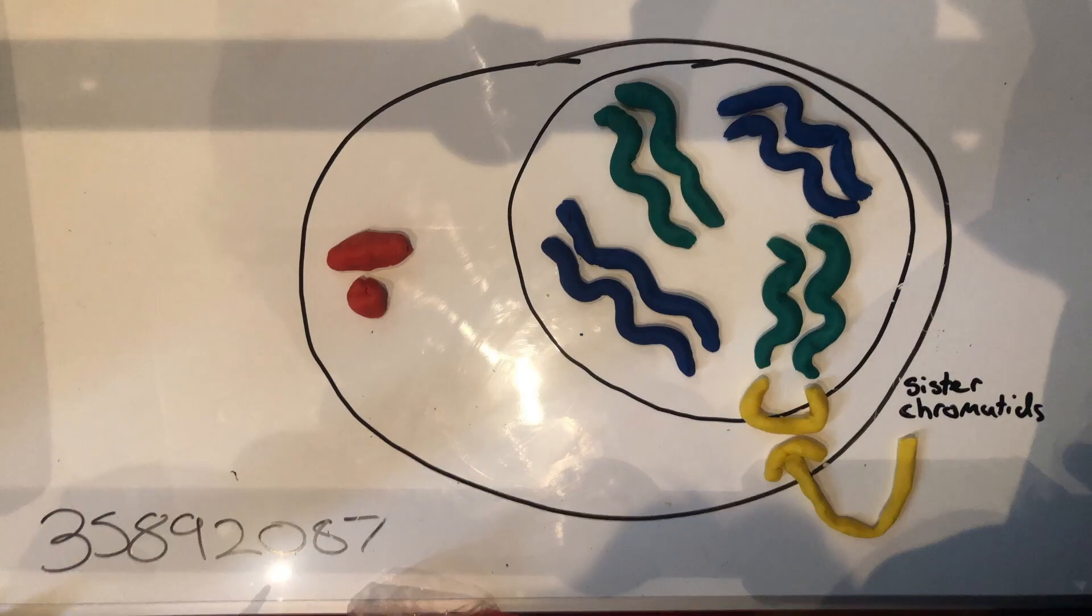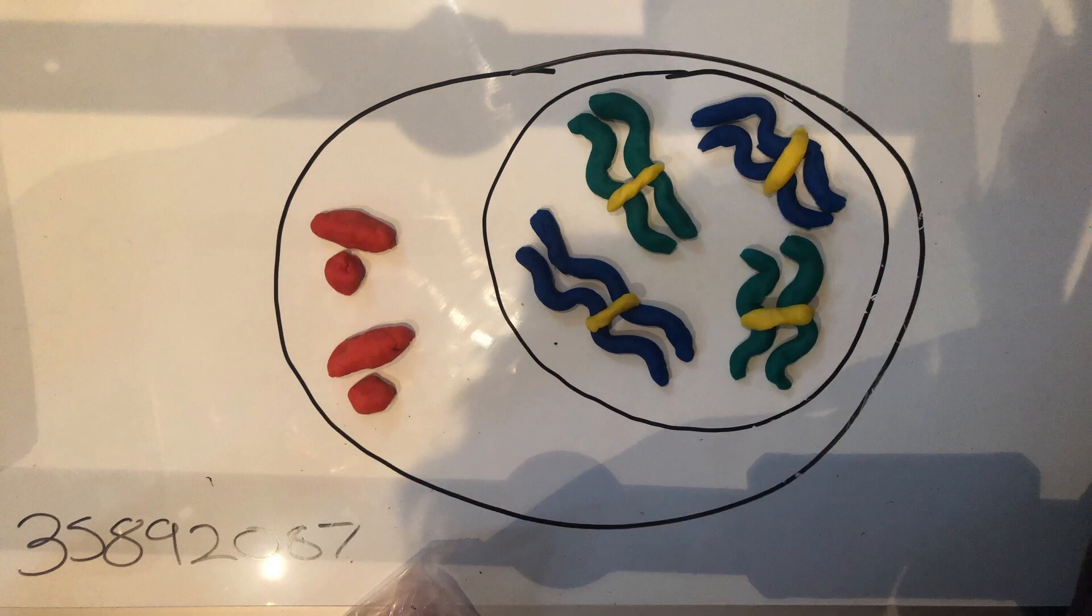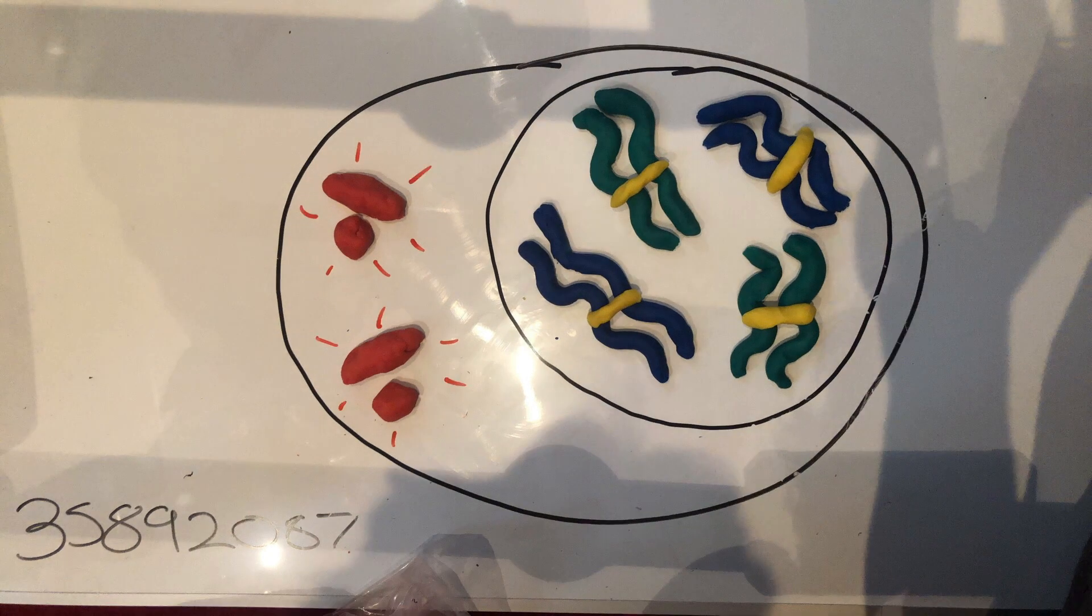Once the DNA has been replicated, the paired centrioles present in the cytoplasm, also known as organelles, duplicate and begin extending microtubules that will later form the meiotic spindle.